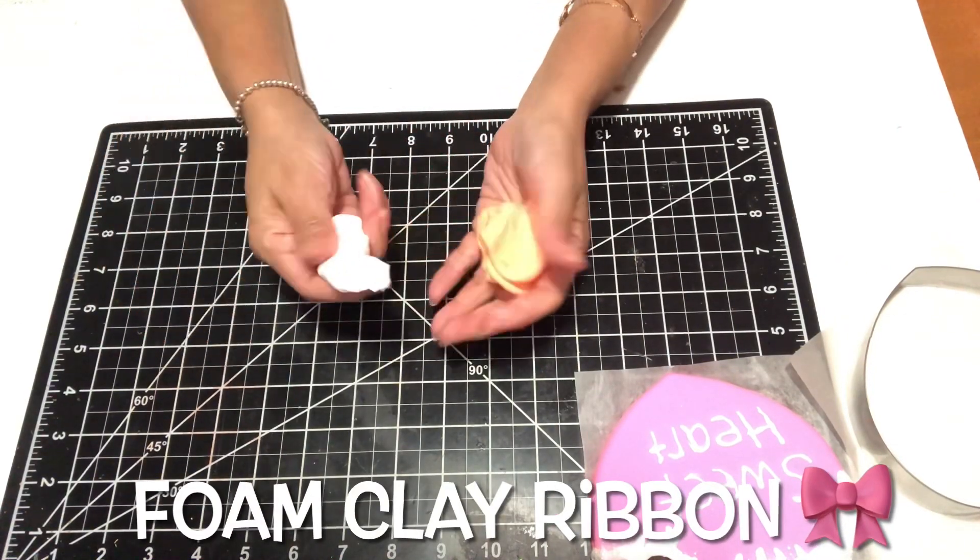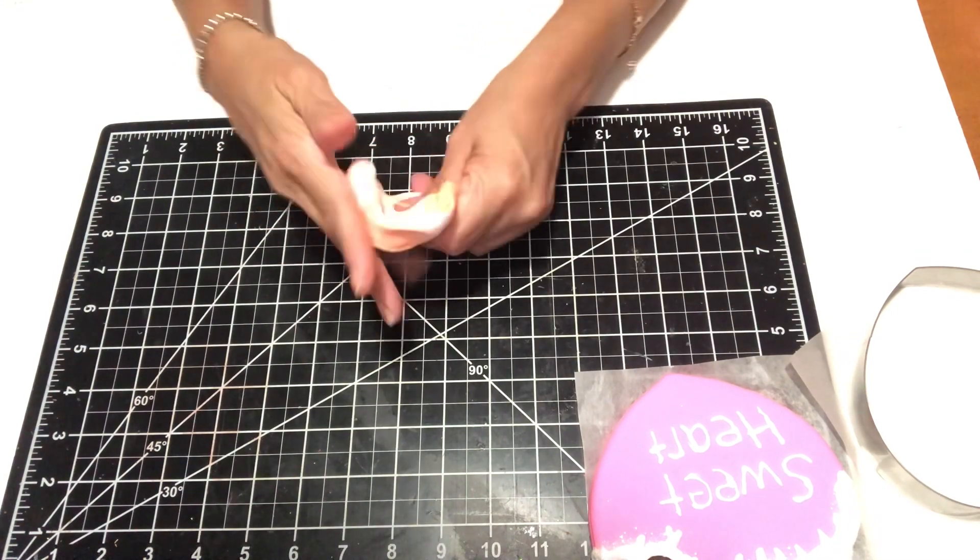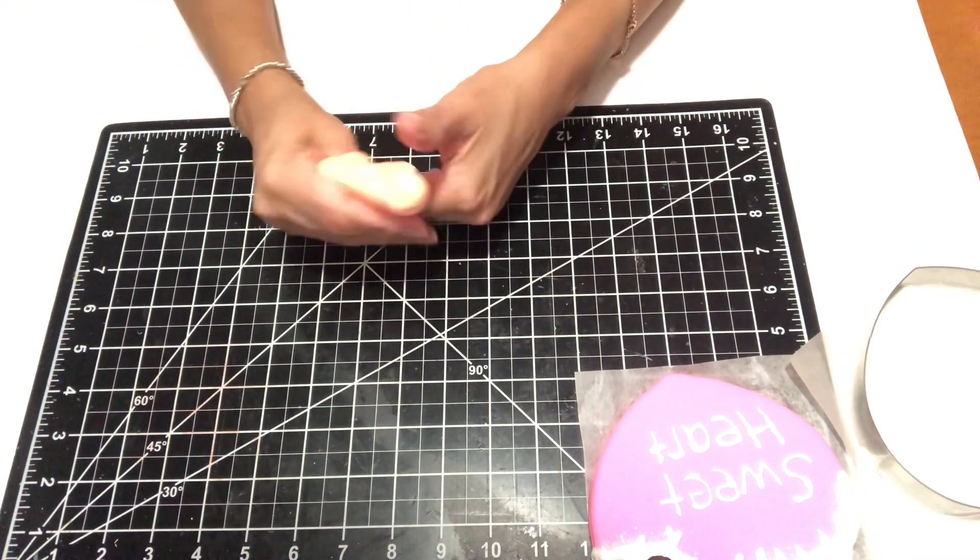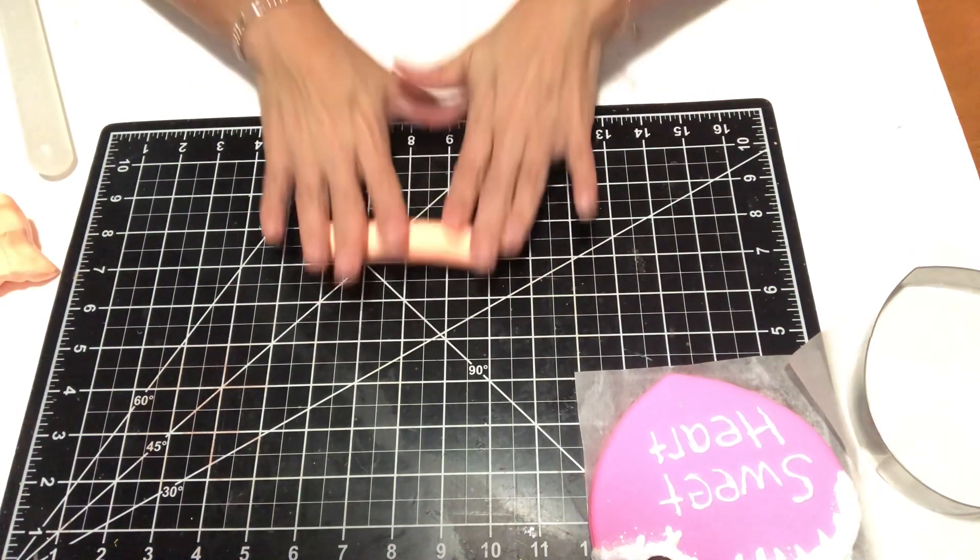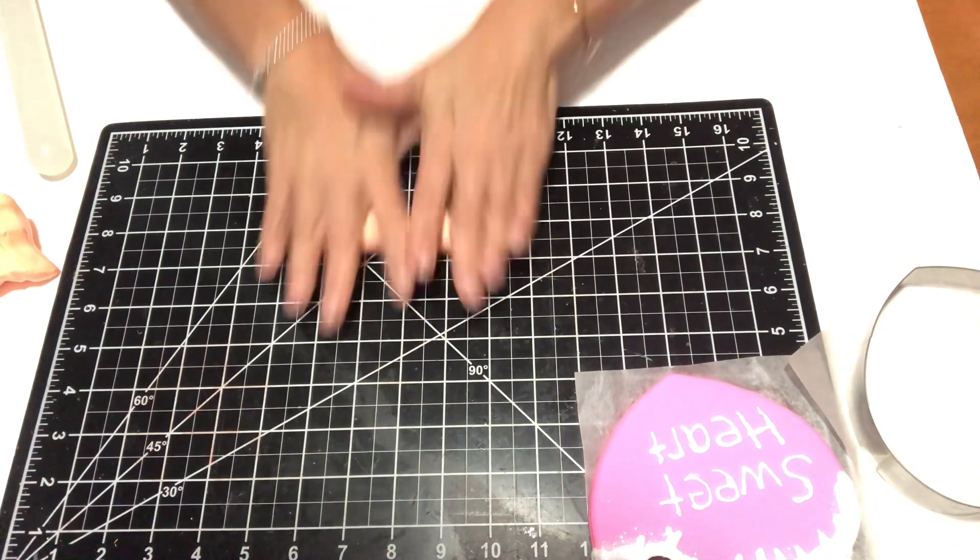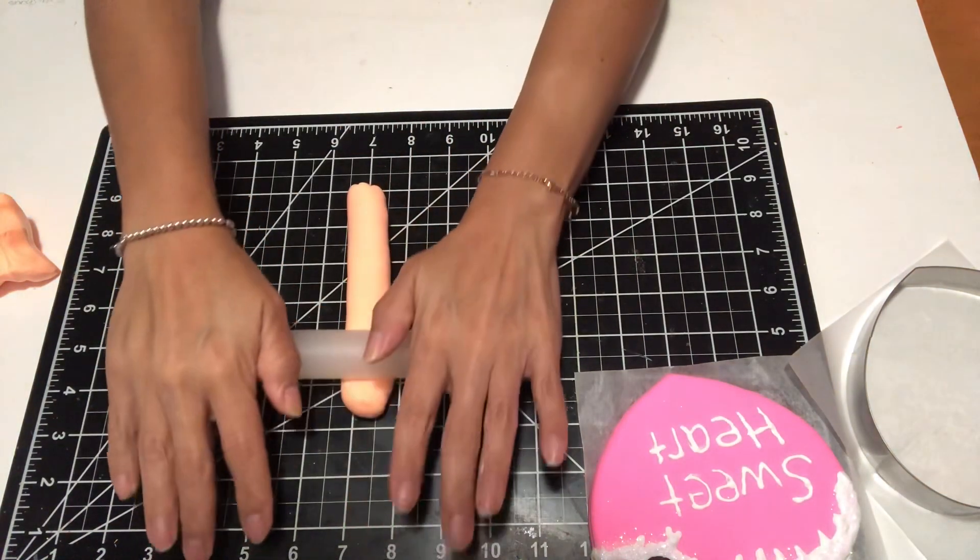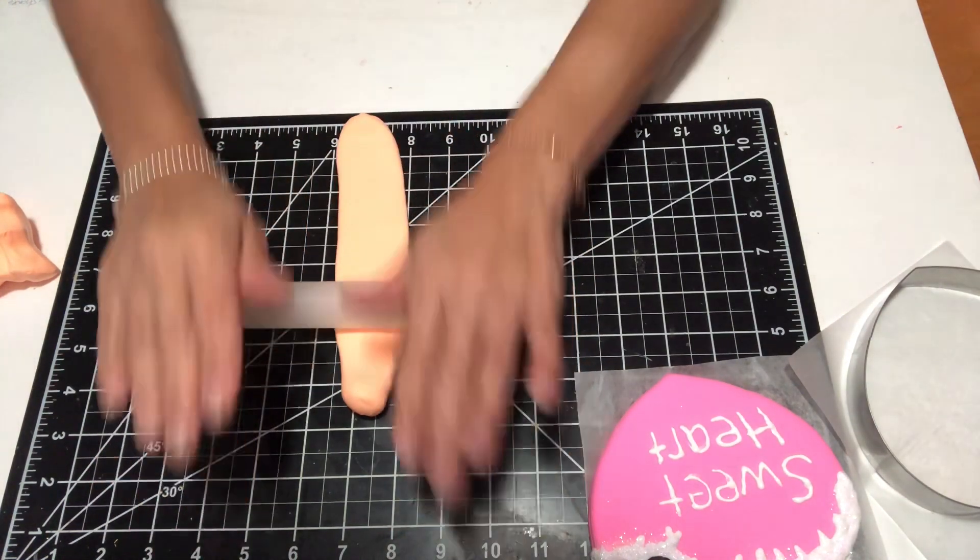Now to this heart I want to add a foam clay ribbon to it because I thought that would look a lot cuter. And so here again that's all I'm going to be doing is just making a cute little bow from foam clay, and then once I am done with that I am going to show you how it looks after I finish adding my little cute bow.